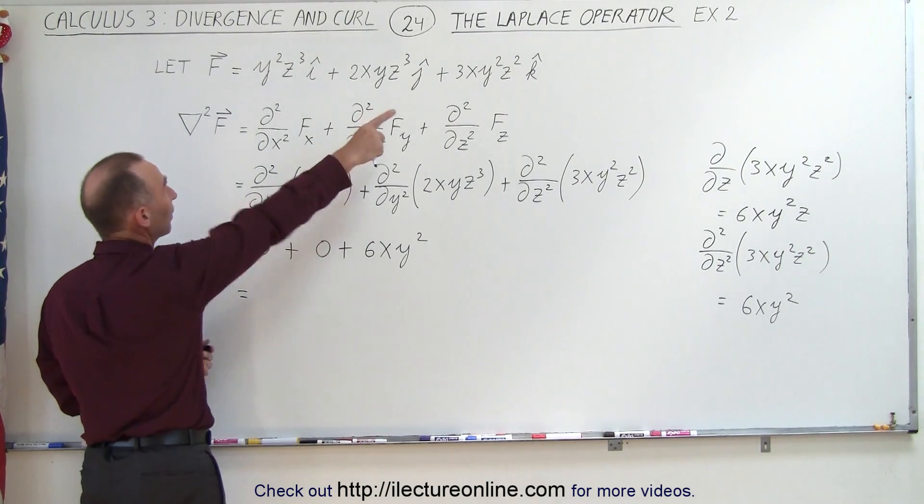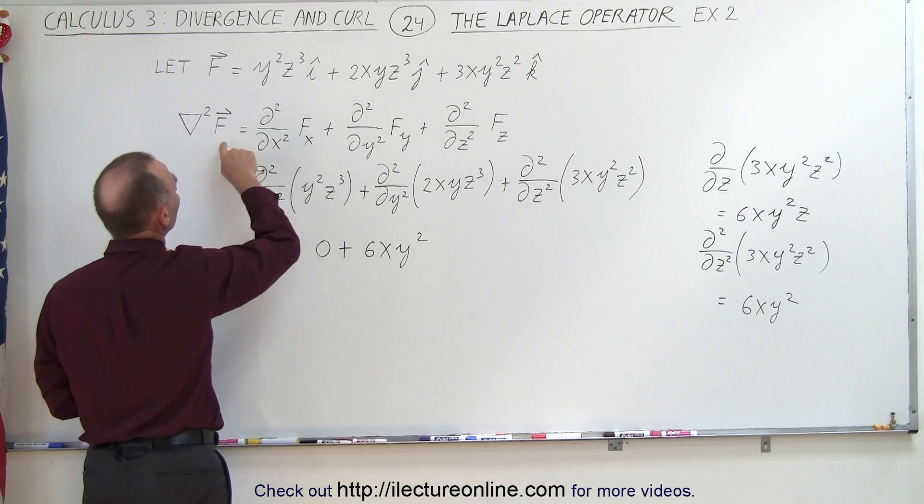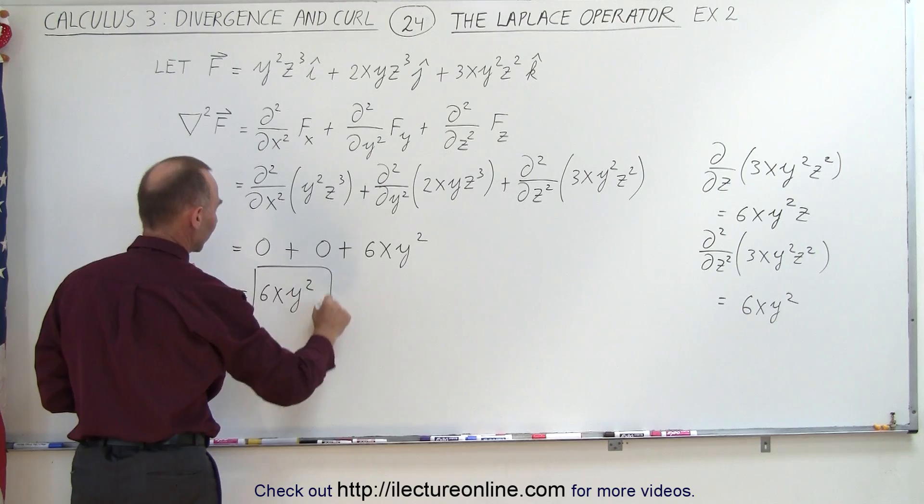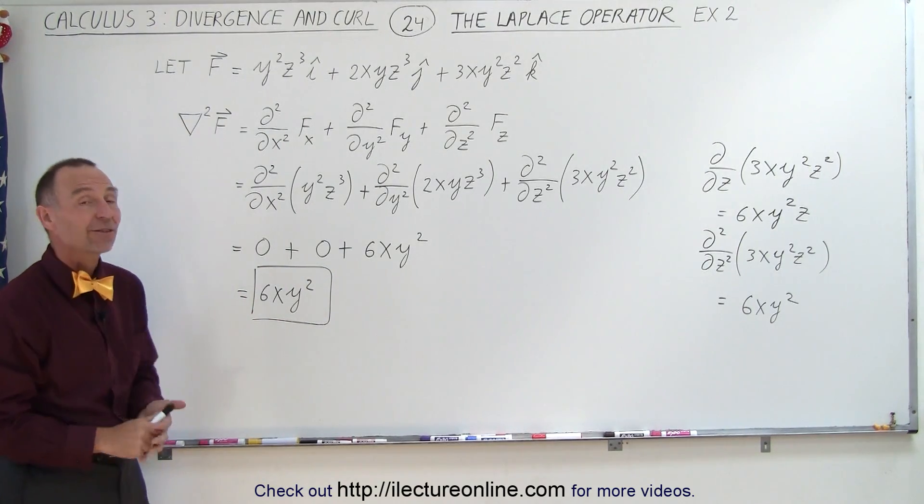So therefore, when we operate with the Laplace operator on a vector field, notice then this becomes only 6xy² in this example. And so you see, it's a little bit easier. And that's how it's done.